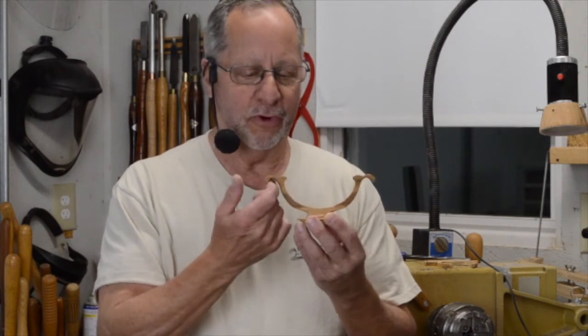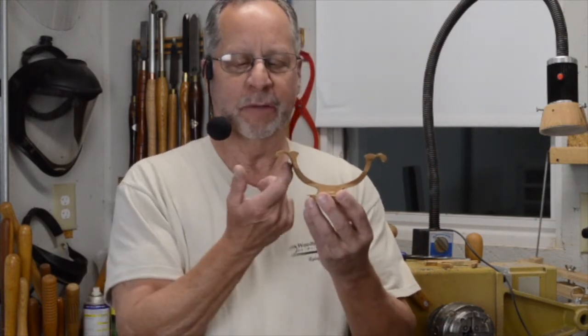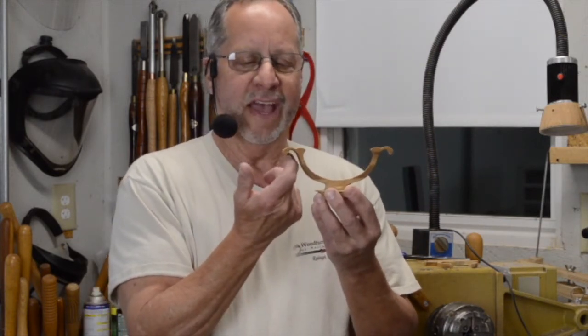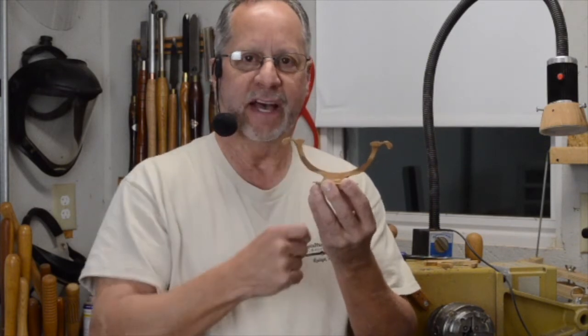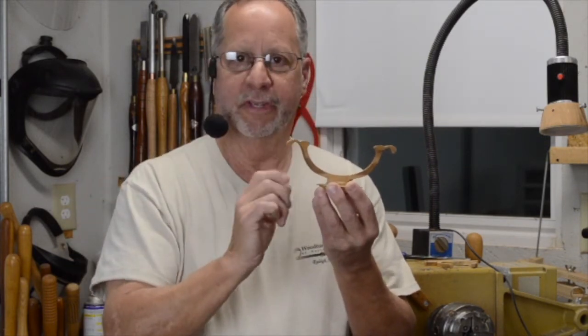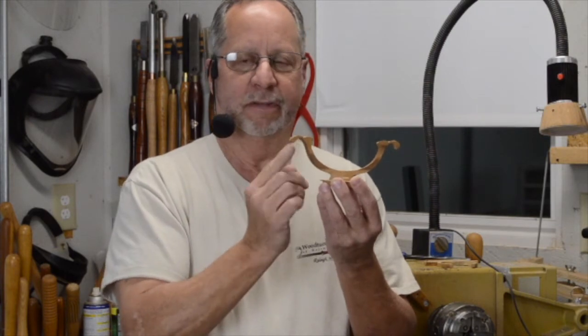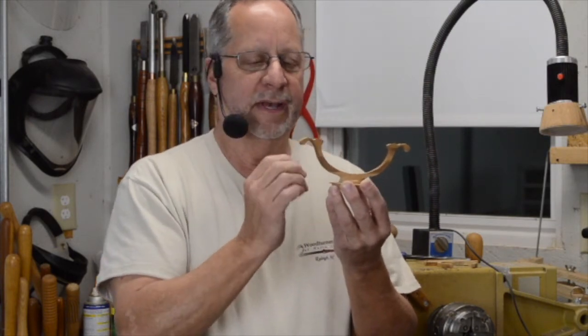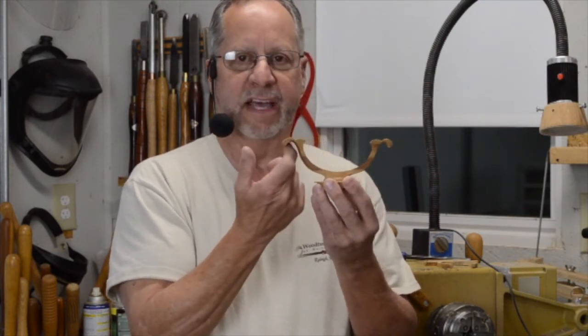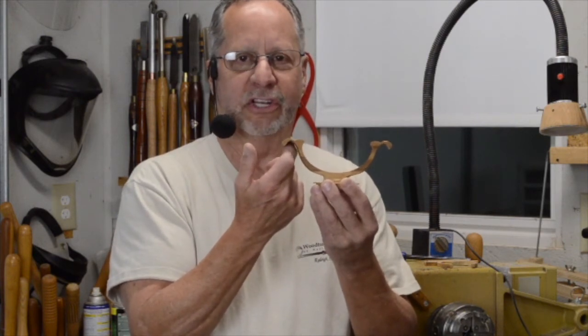What I wanted to show you this morning is turning a bowl with an overhanging lip or a lip on the inside. Usually cleaning up this area is very difficult. I've used small scrapers, different kinds of tools, trying to get that clean enough because it's really hard to sand.